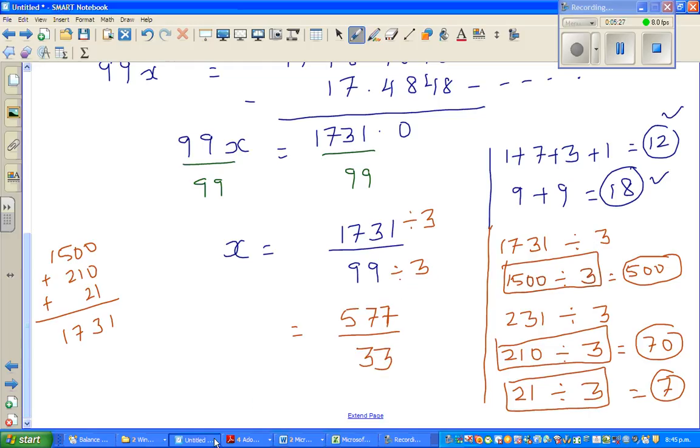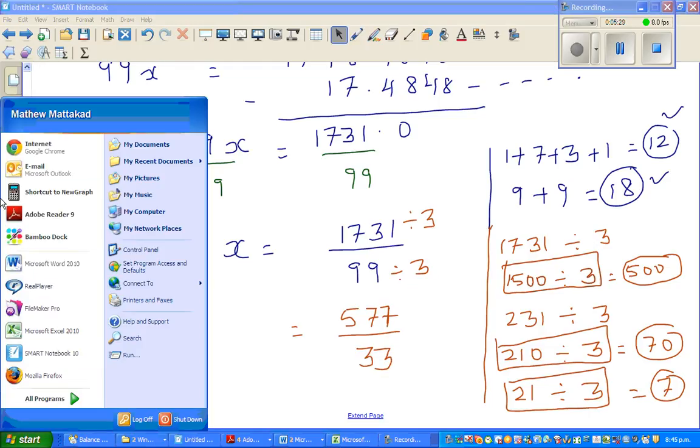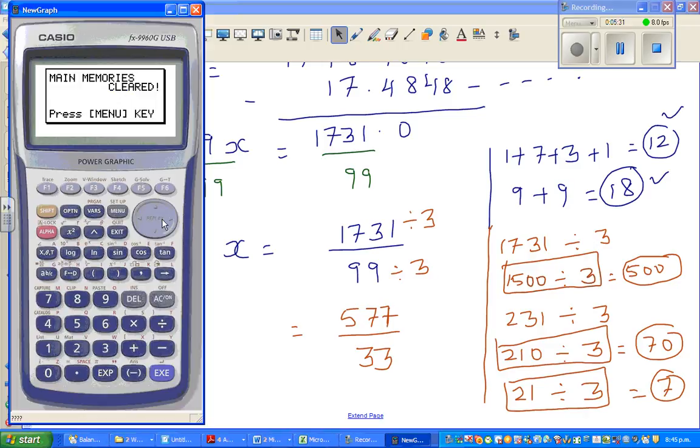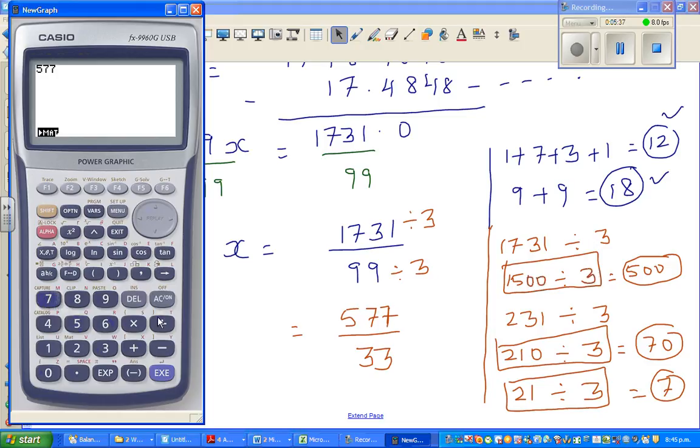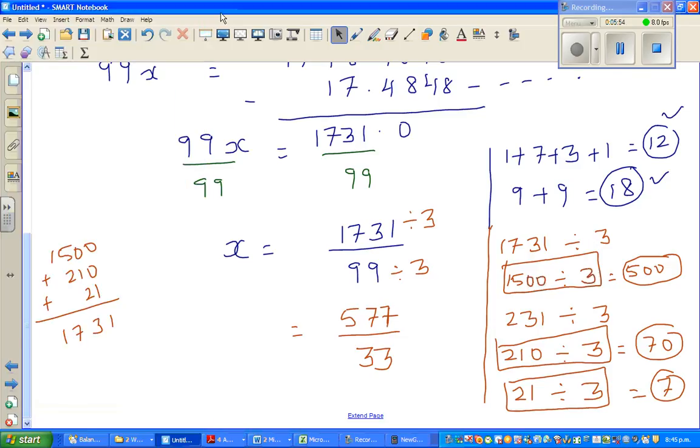Now just to show this on a calculator. Where's my calculator? So this is menu run. So let's do 577 divided by 33. So here's the number 17.484848.